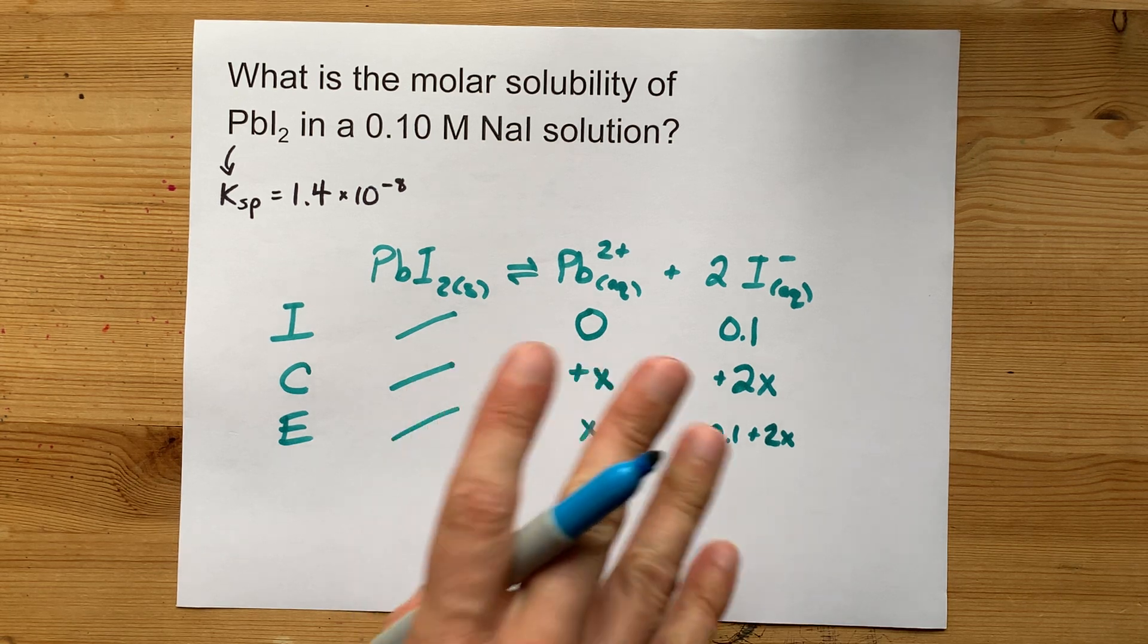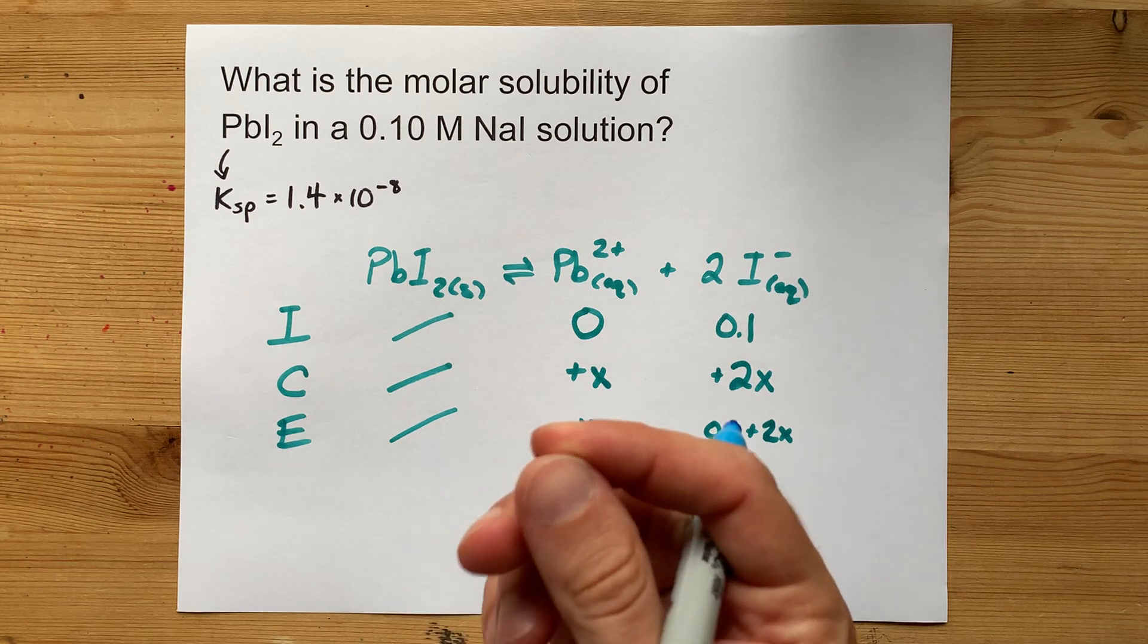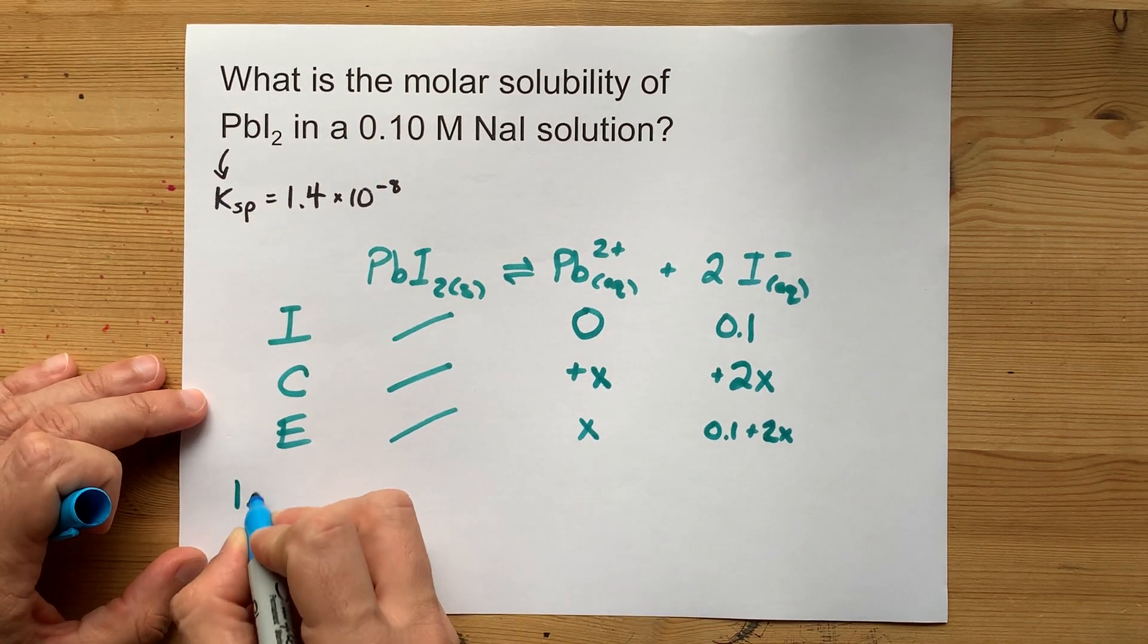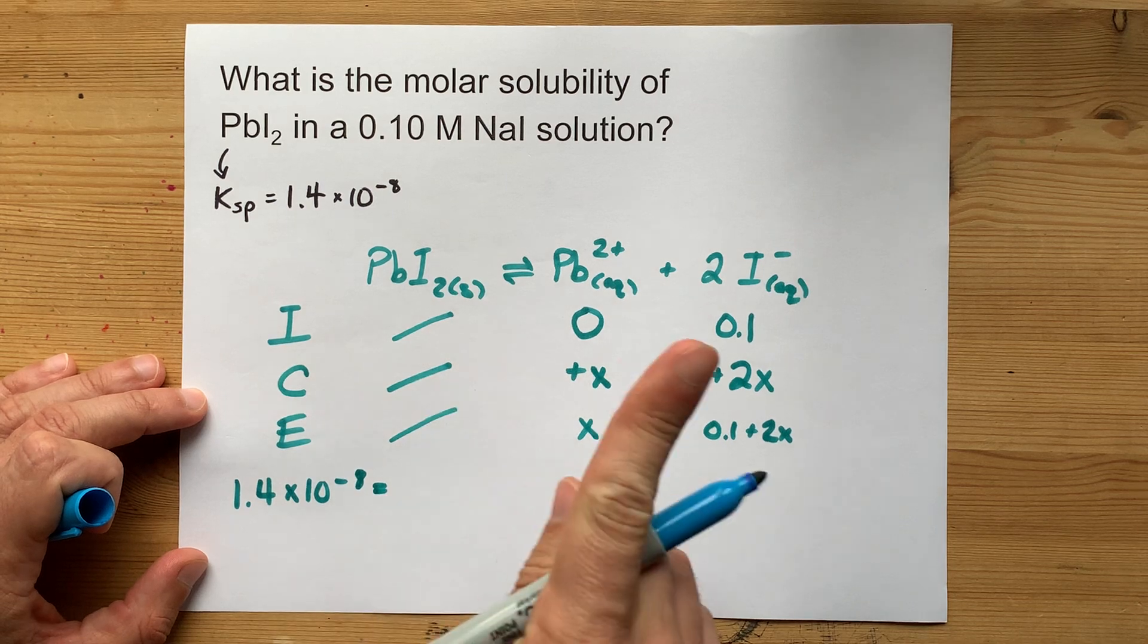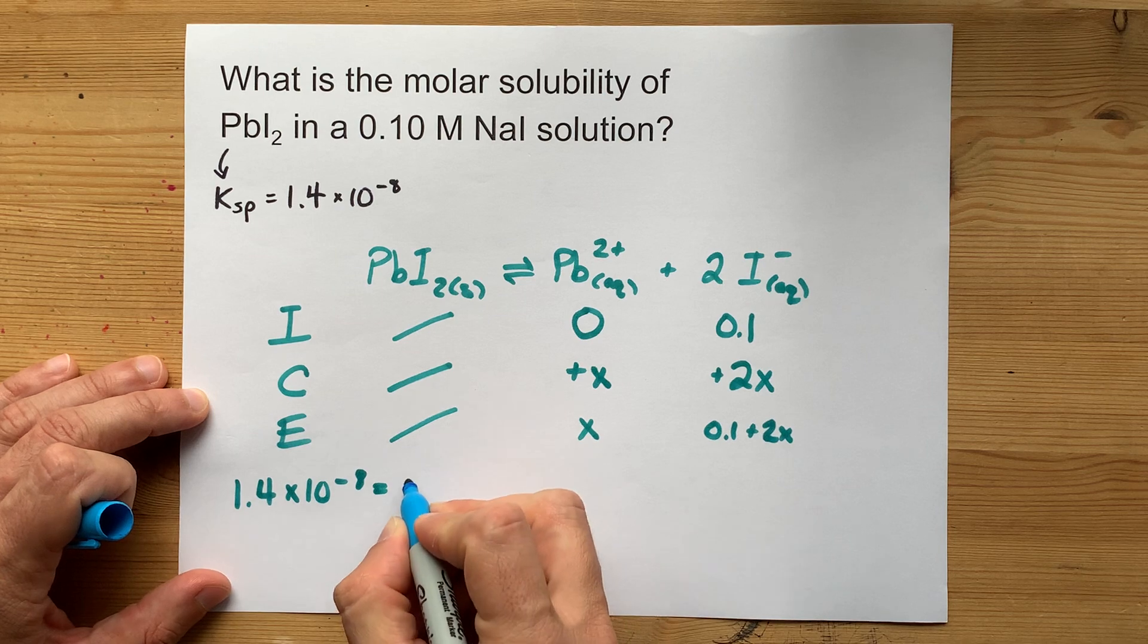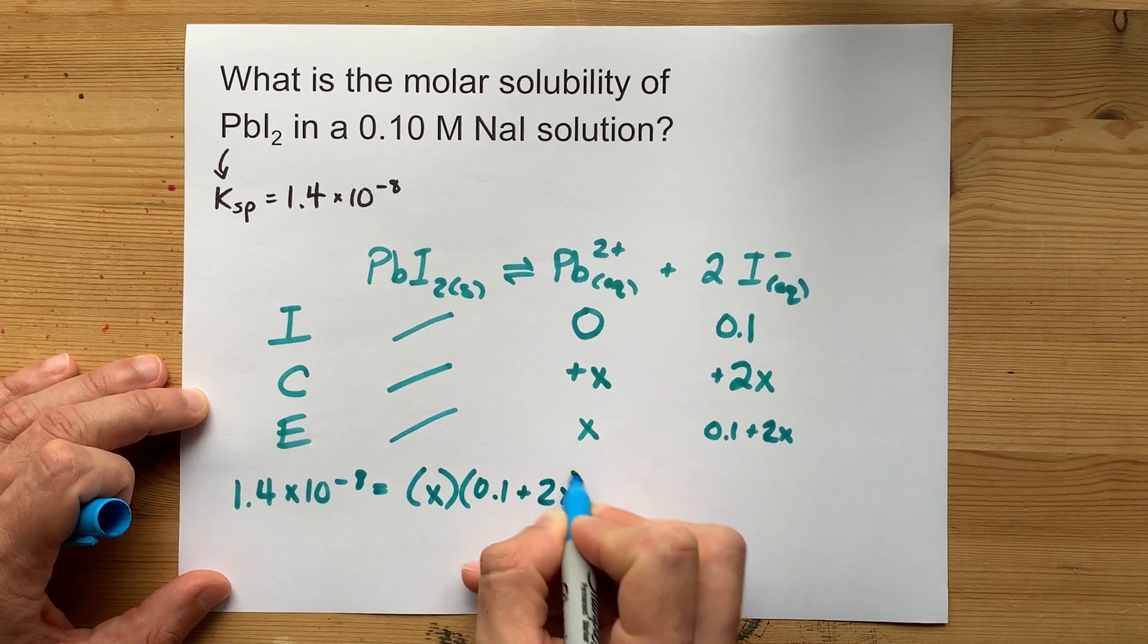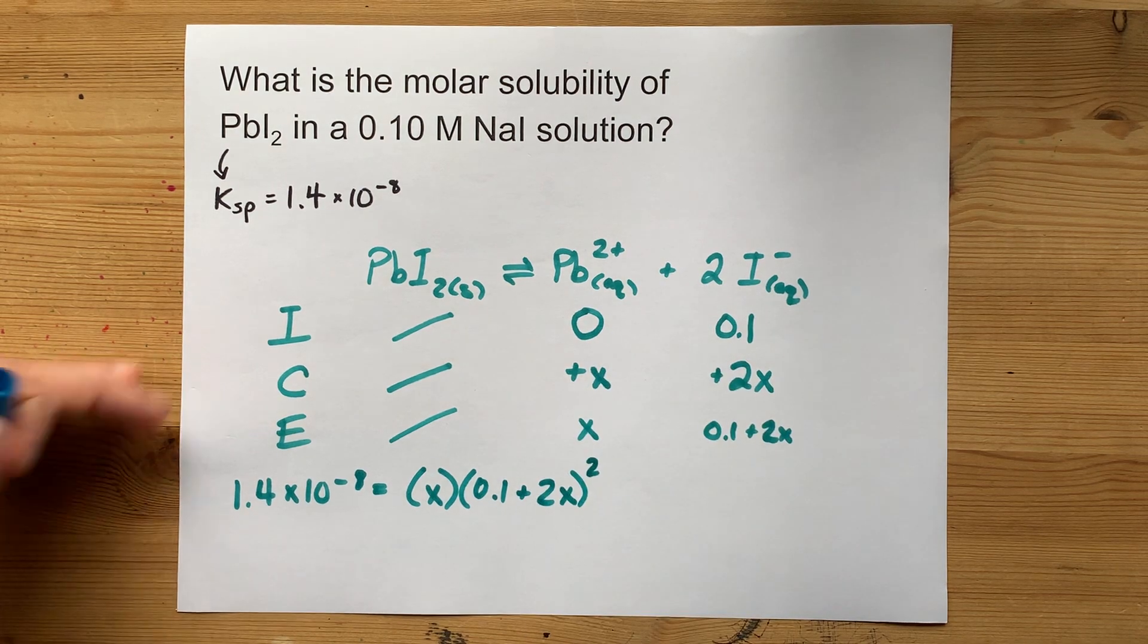Now, to solve for X, we use these equilibrium concentrations in the equilibrium expression. What I mean is 1.4 times 10 to the negative 8 is the product—get it, solubility product—of the Pb²⁺ concentration times the concentration of iodide squared. The concentration of iodide is squared because of the coefficient 2 here.